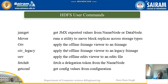OIV: applies the offline FS image viewer to an FS image. OIV legacy: applies the offline FS image viewer to a legacy FS image. OEV: applies the offline edit viewer to an edit file. Fetch delegation token: fetches a delegation token from the name node. Get configuration: gets the configuration values from the configuration.